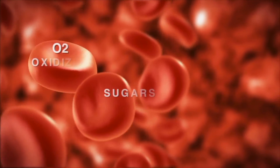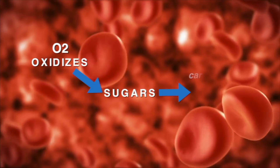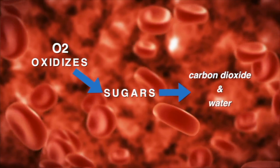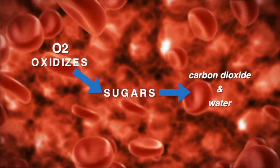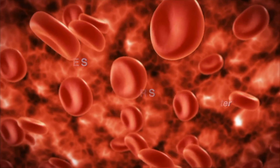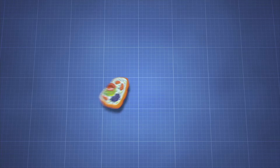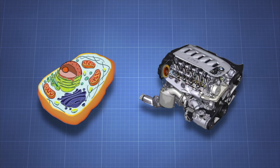In the body, you metabolize sugars. Sugars are oxidized by O2 and are turned into carbon dioxide and water as well. However, a cell is much more efficient at using food than the engine of a typical gas engine is at burning gasoline.